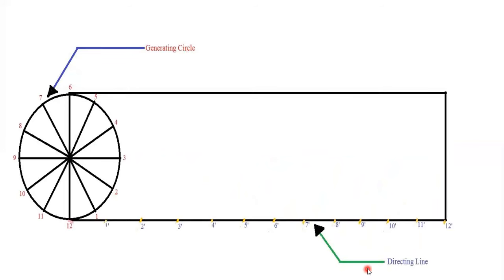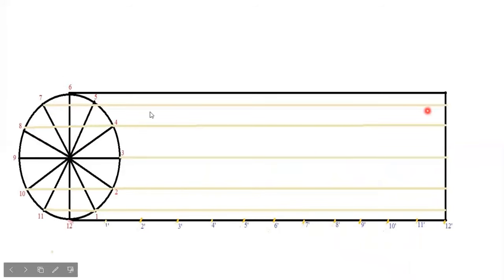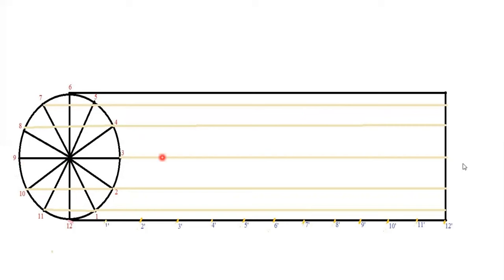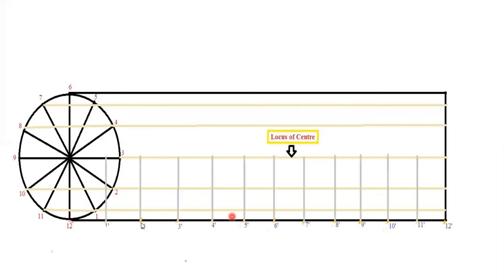This circle is called the generating circle and the bottom line is called the directing line. Now draw horizontal parallel lines from each division point on the circle. Connect points like 7 and 5, 8 and 4, 9 and 3 — these will be on the same horizontal line. Extend these lines across the diagram. From the division points 1', 2', 3' on the directing line, draw vertical lines up to the locus of center, naming these points C1, C2, C3 up to C12.